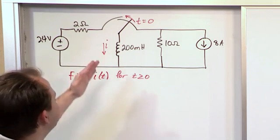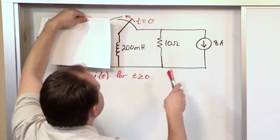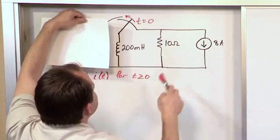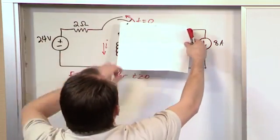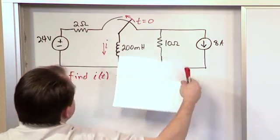So we know that before the switch moves, you can essentially cover up all of this stuff. There is current flowing here through the inductor. We switch it over here, all of this stuff is now removed, and there's another source competing with the current that was initially flowing.